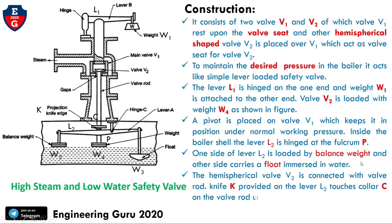The hemispherical valve V2 is connected with a valve rod. A knife edge K is provided on the lever L2, and a collar C is on the valve rod. Under normal pressure, this is the construction of this safety valve.